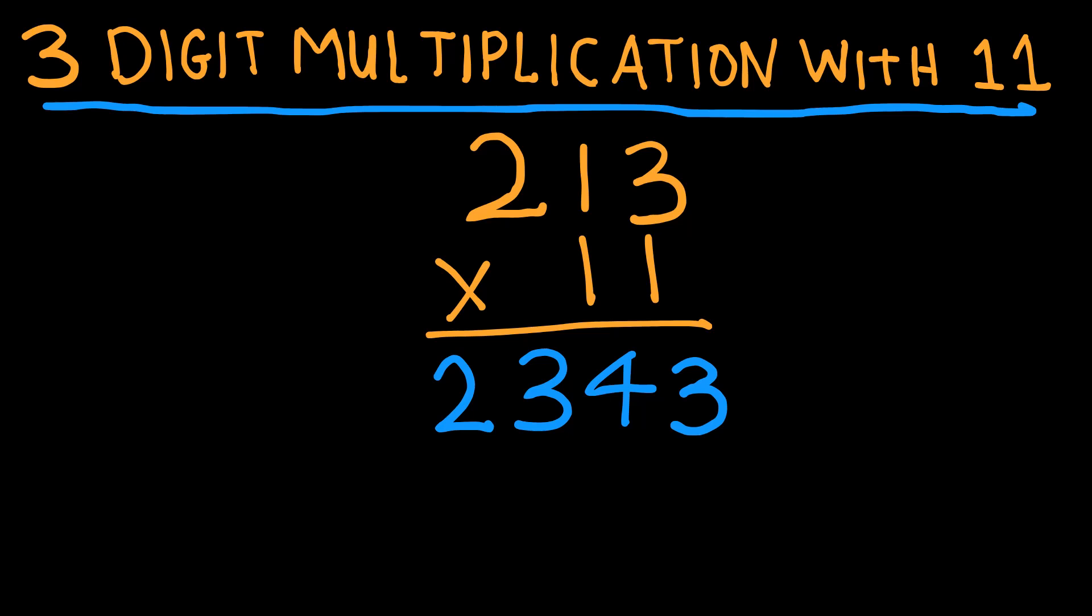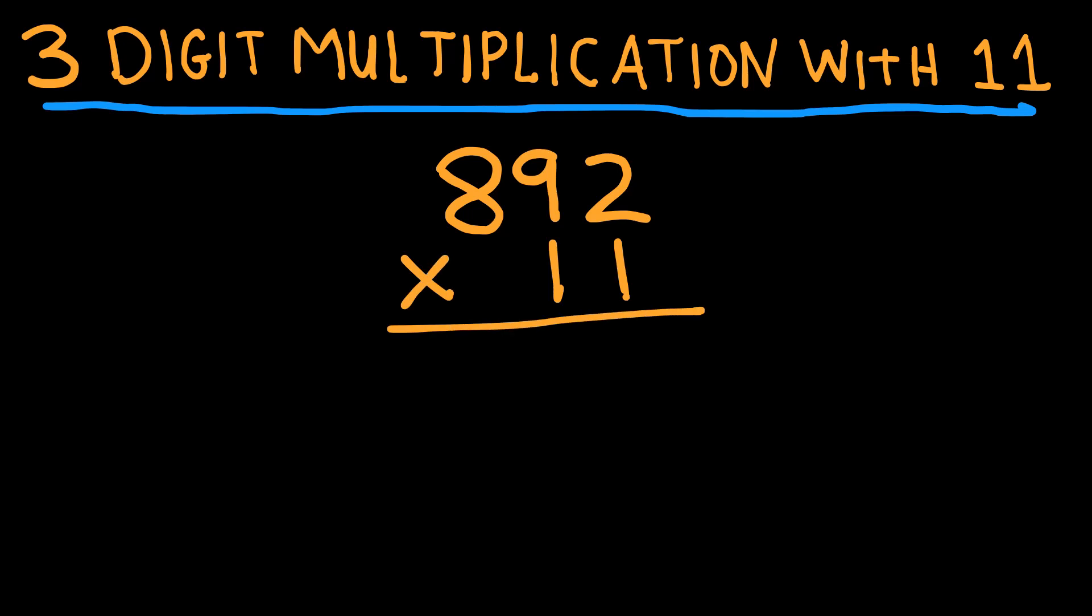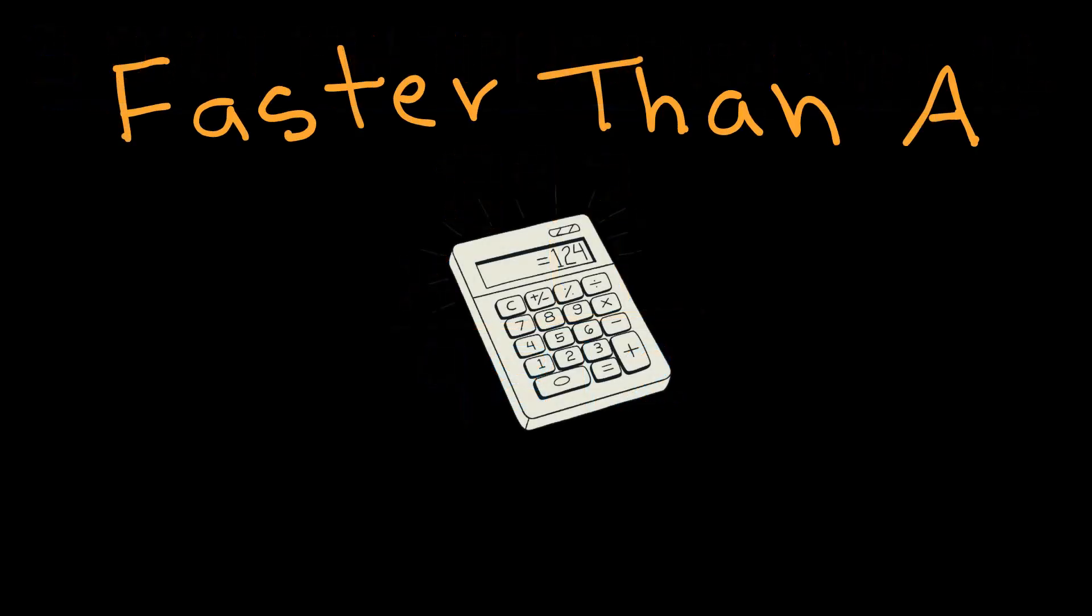Don't forget that when it's bigger than 9 we carry the 1. Here is an example: 892 times 11. We keep the 8, let's add 8 plus 9. 8 plus 9 is bigger than 9, so let's carry the 1. That will be 8, and we keep the 2. 9812 is our final answer. That was faster than our calculator!